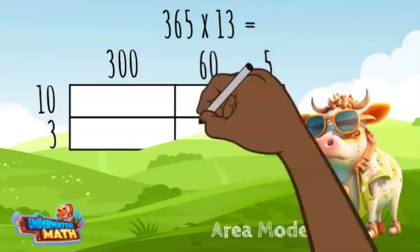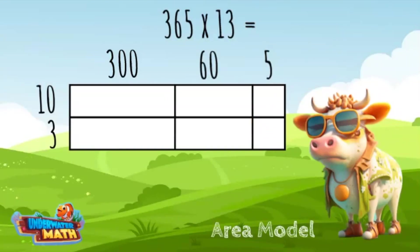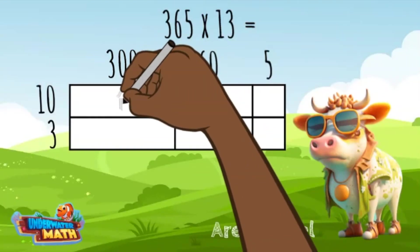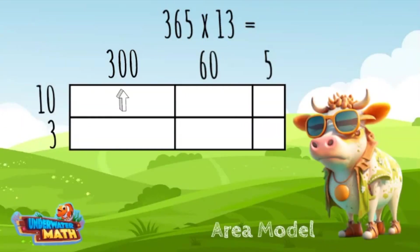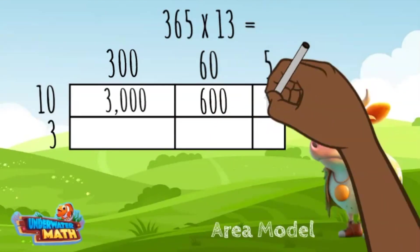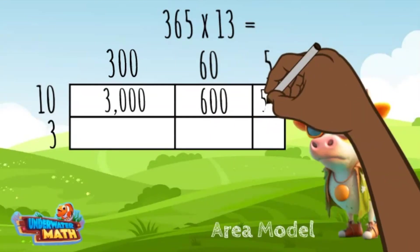Let's get moving. I multiply 10 by each number in the top row. Here's what it looks like: 300 times 10 is 3000. I write the product in the first row, first column. Then I multiply 10 times 60, this equals 600. Then I multiply 10 times 5, which equals 50.